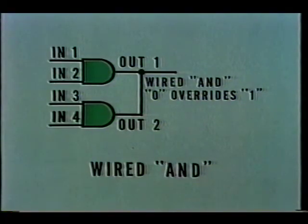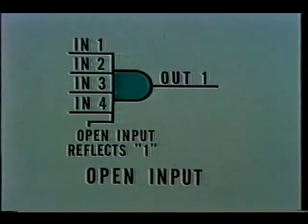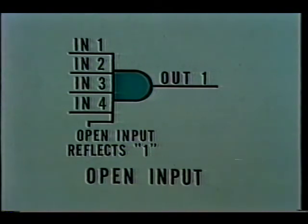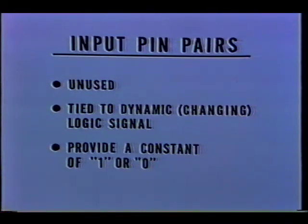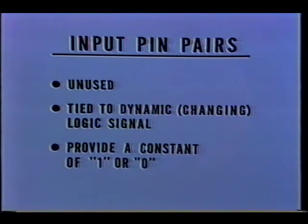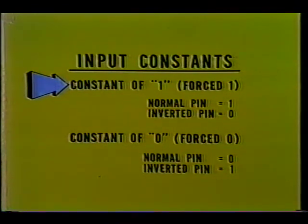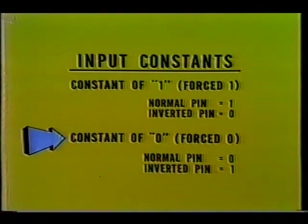Occasionally, one or more gate outputs are tied together in what is called a wired AND condition. In that case, the zero logic level overrides a 1. If the input to a gate is not used, it is left open and will reflect a logical one. Input pin pairs to a module are either unused, tied to dynamic logic signals, or connected in such a way as to provide a constant 1 or 0 to the module. A constant 1 exists when the normal pin of the input pin pair is always at a 1 level and the inverted a 0; this is called a force 1 condition. A constant 0 exists when the normal pin of the pin pair is always at a 0 level and the inverted a 1; this is called a force 0 condition.